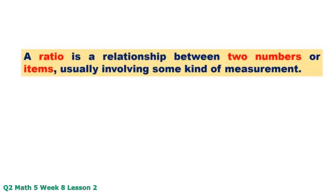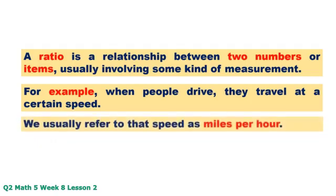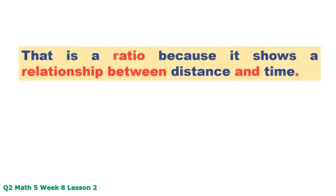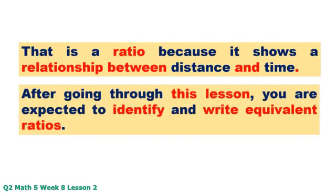A ratio is a relationship between two numbers or items, usually involving some kind of measurement. For example, when people drive, they travel at a certain speed. We usually refer to that speed as miles per hour. That is a ratio because it shows a relationship between distance and time.